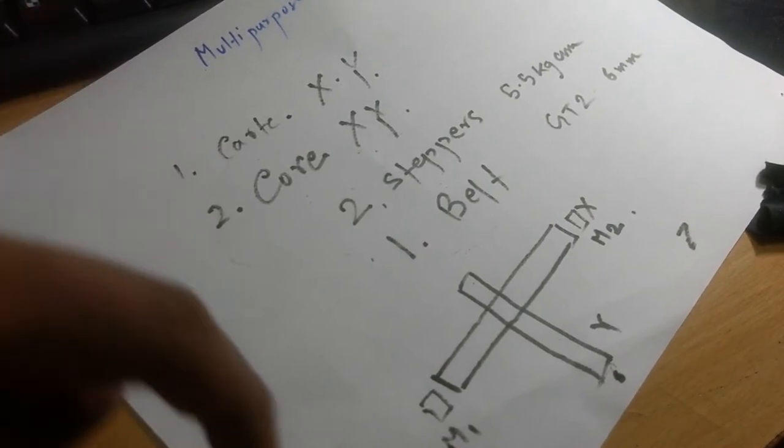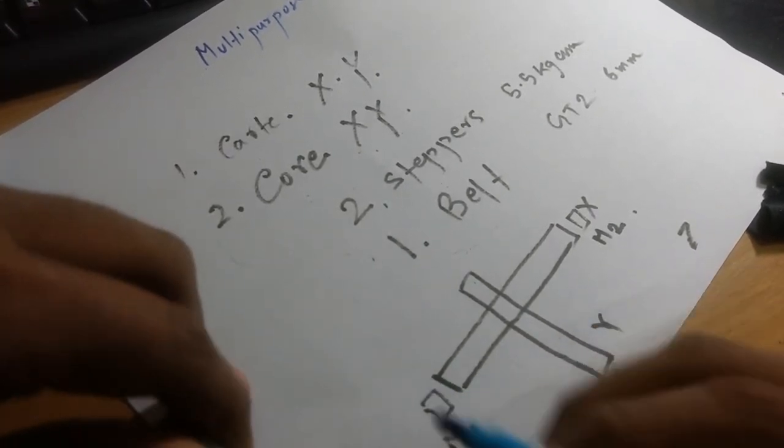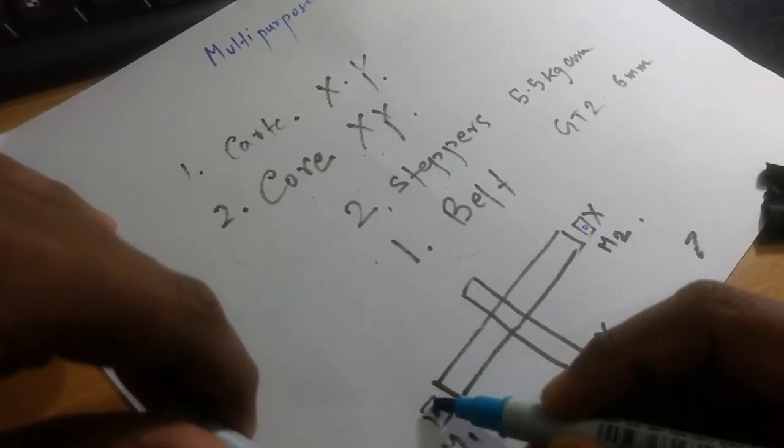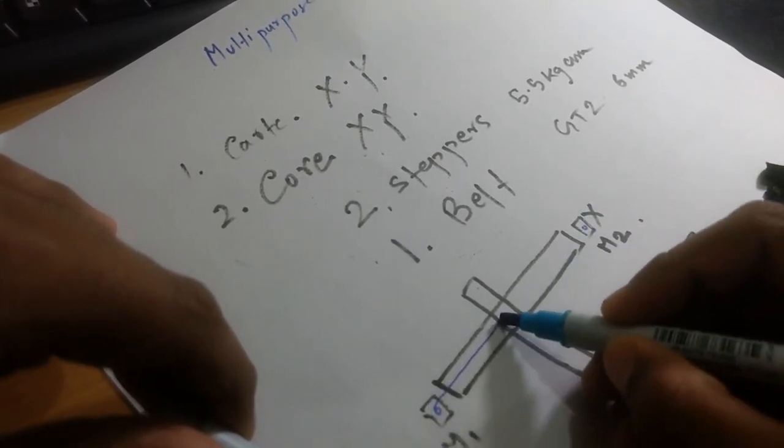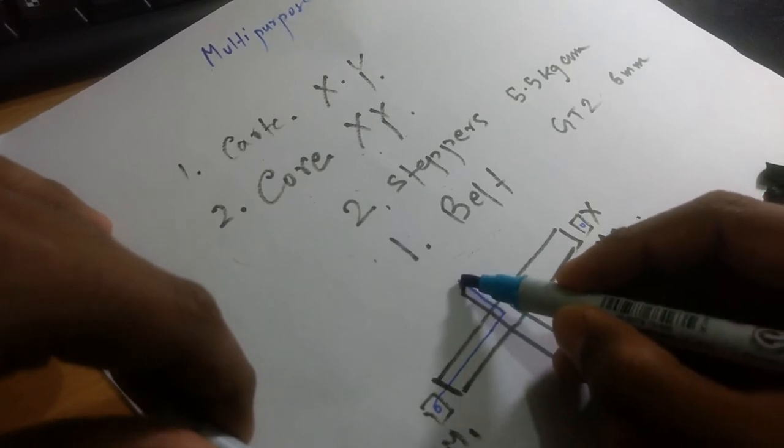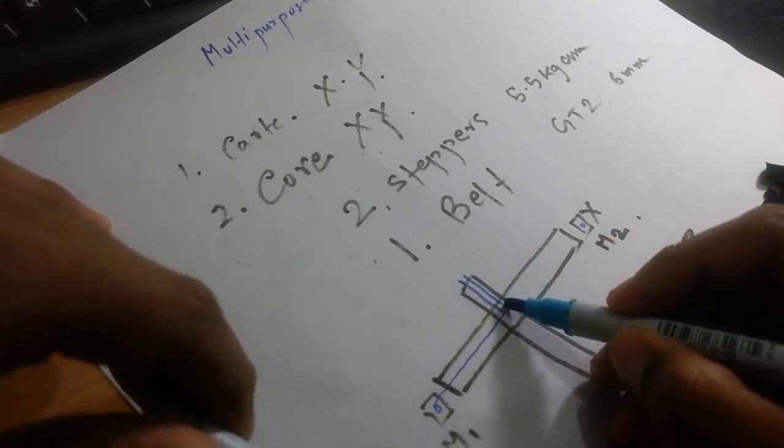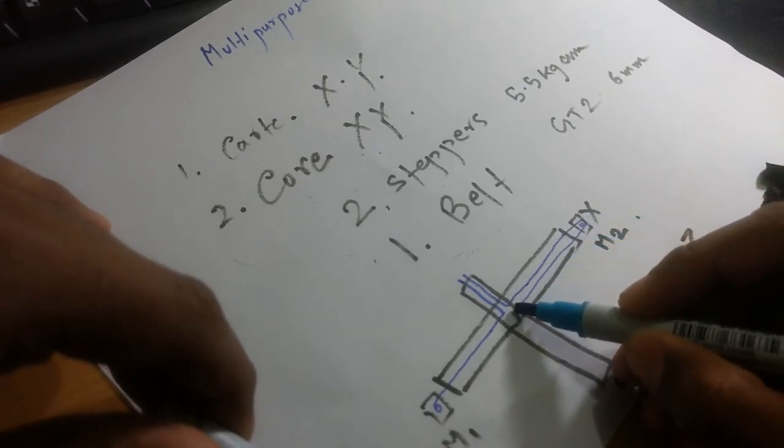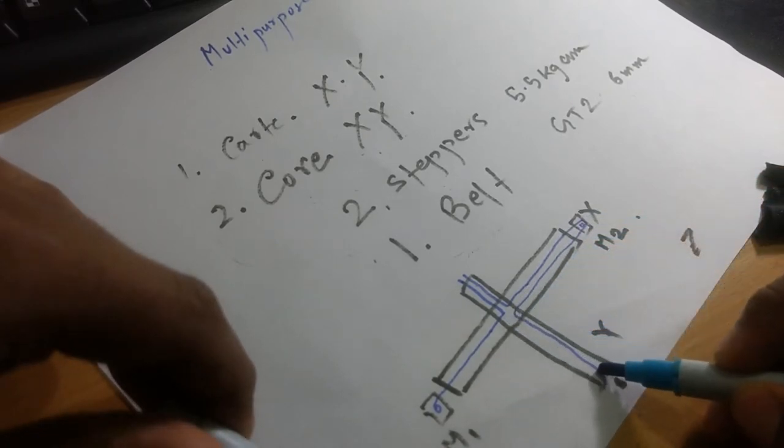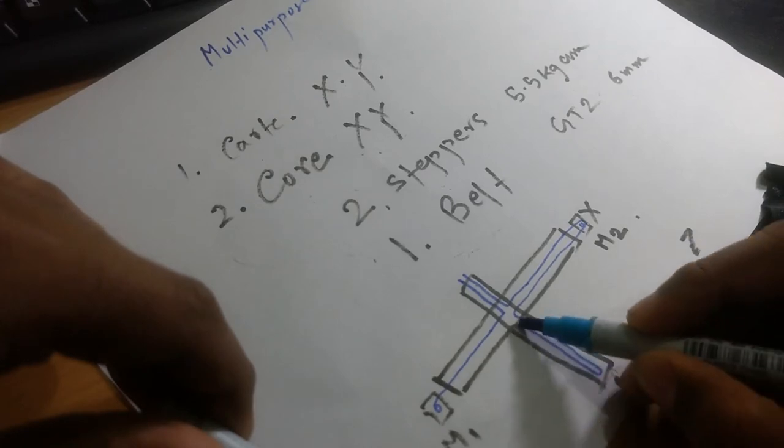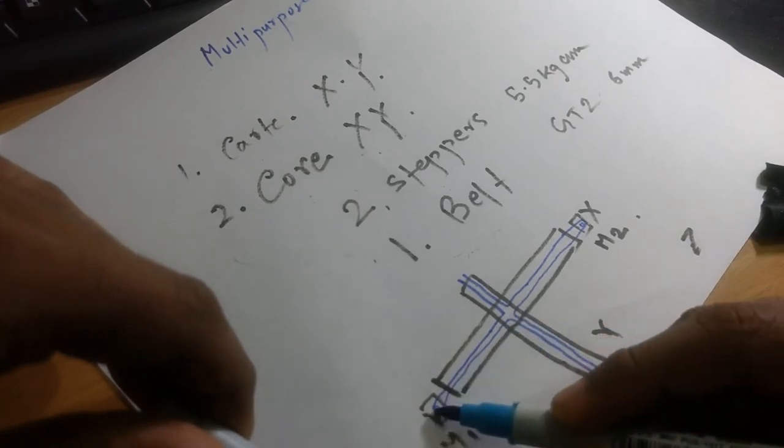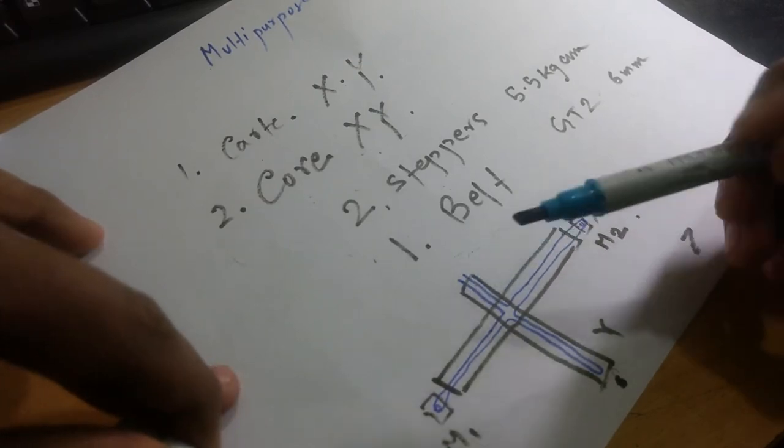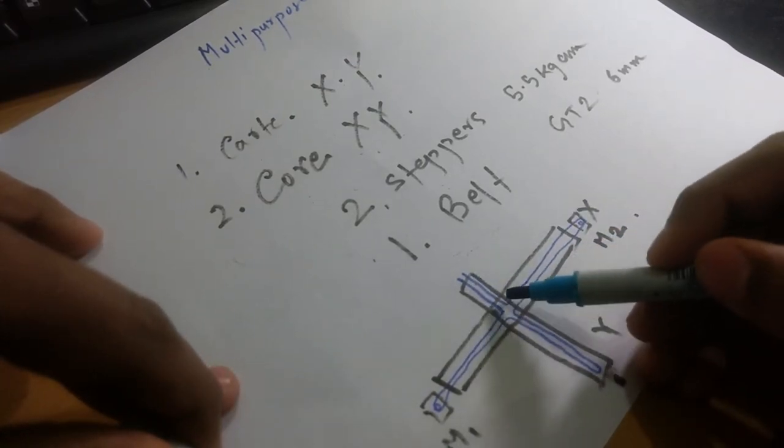So let's take that. Here are the two motors. The belt will come here, it will be attached here. So the ending of the belts are here and it will be attached with the body.